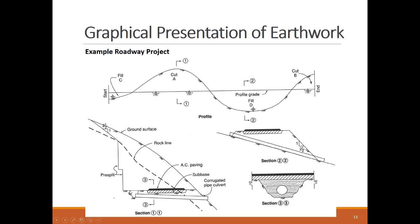You can also see a corrugated pipe and a culvert in the section, which is one of the two shown in the profile view.